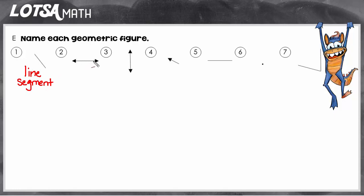On number two, we have a line, but the arrows show that it's going forever in both directions. And that makes it a line.